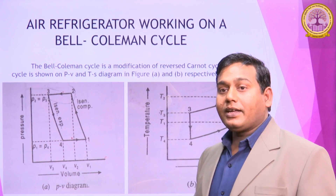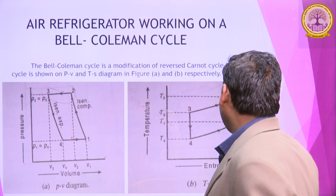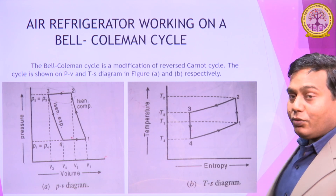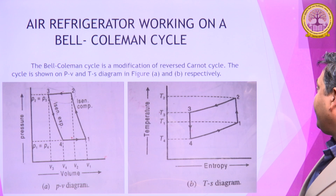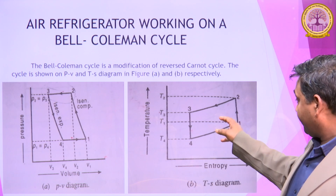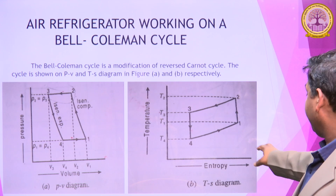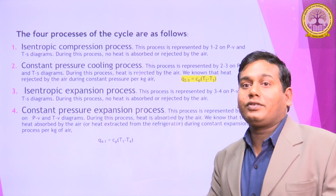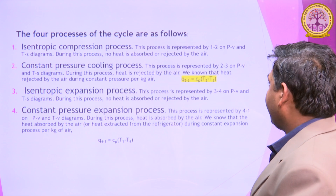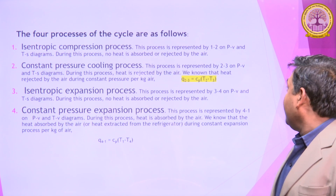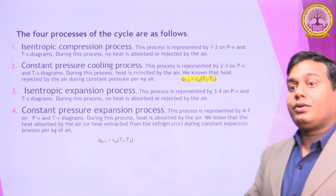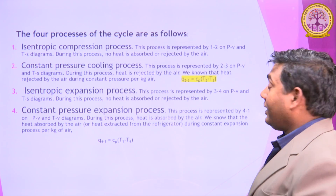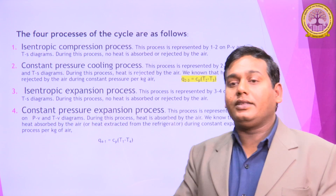By the help of the P-V Diagram, we are discussing the Temperature-Entropy Diagram. In the Temperature Diagram, T2 is greater than T3, and T1 is greater than T4. There are four processes in the P-V Diagram. The first process is the Isentropic Compression Process, 1 to 2. In this process, there is no heat addition and rejection.